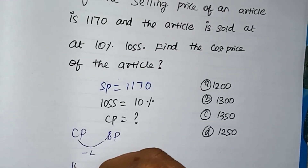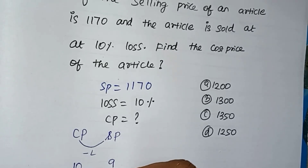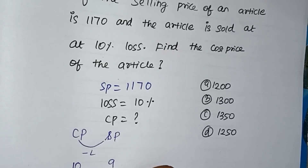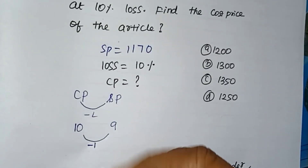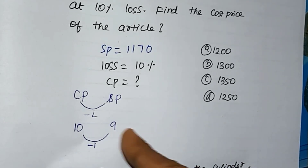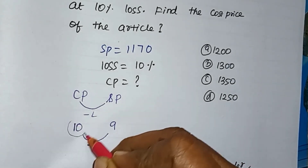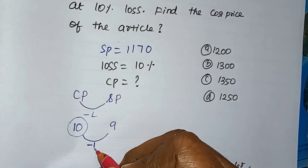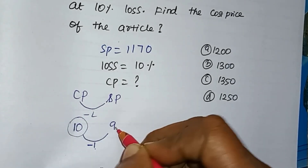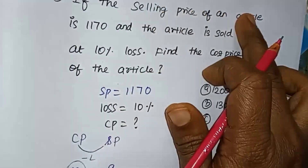For example, if I have a price of $10 and I get a loss, I get a loss of $1. So if I get the cost price and subtract the loss of $1, I get the selling price.